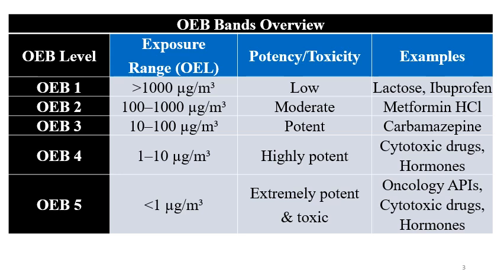In OEB1 the OEL exposure range is greater than 1000 micrograms per cubic meter. The potency and toxicity of these chemicals is low. Examples include lactose and ibuprofen. In OEB2 the OEL exposure range is up to 1000 micrograms per cubic meter and the toxicity or potency is moderate. An example is metformin.